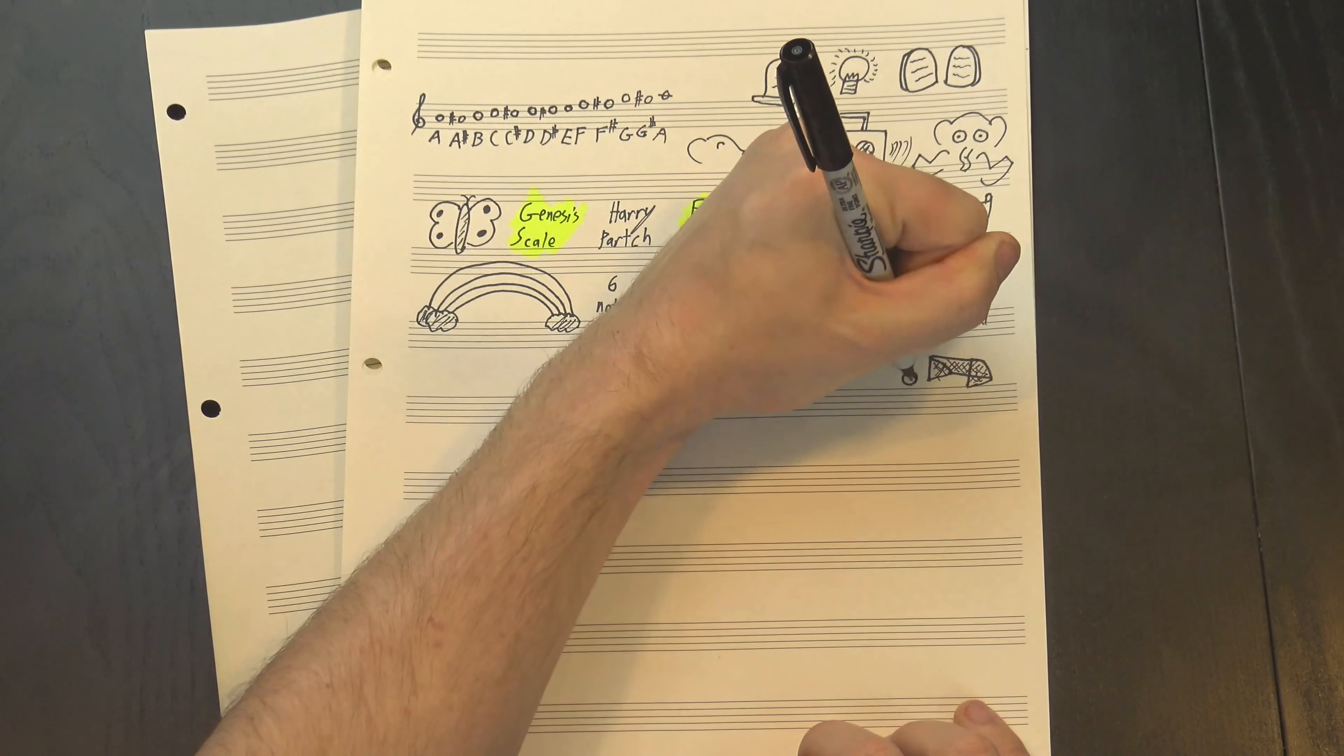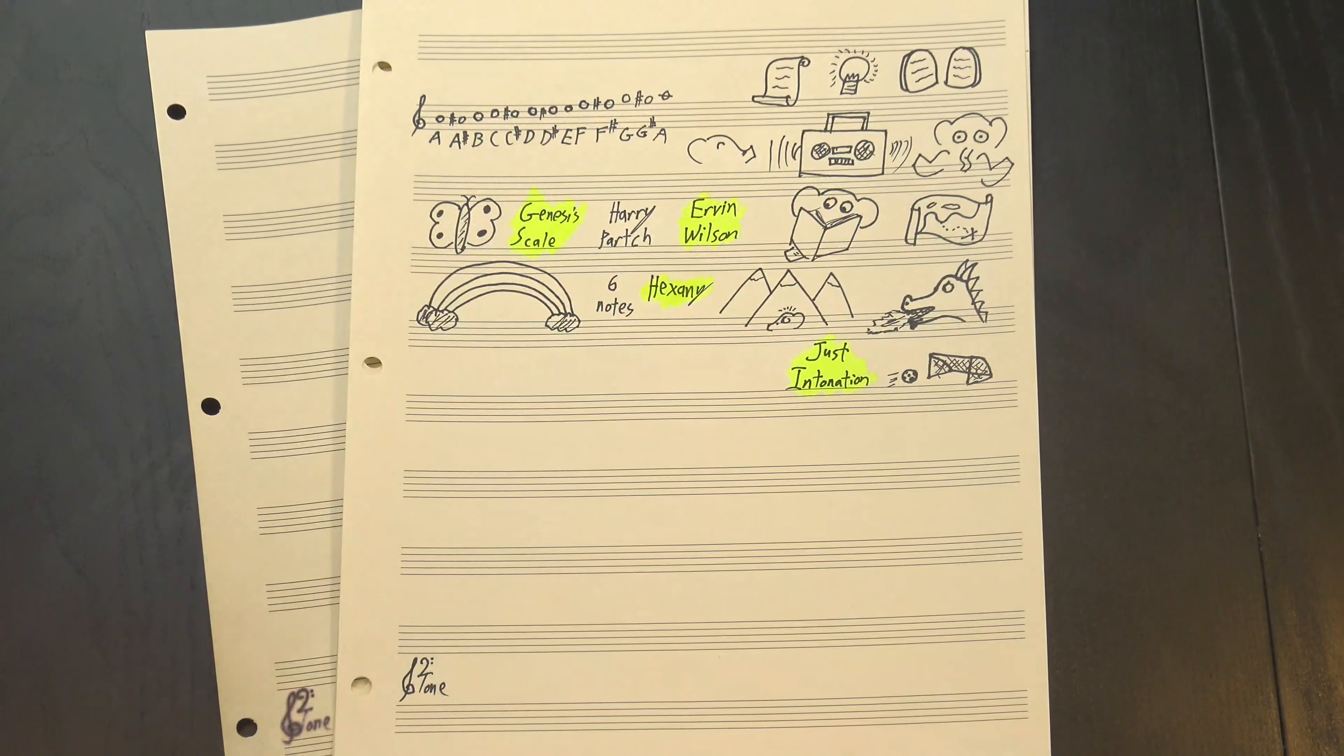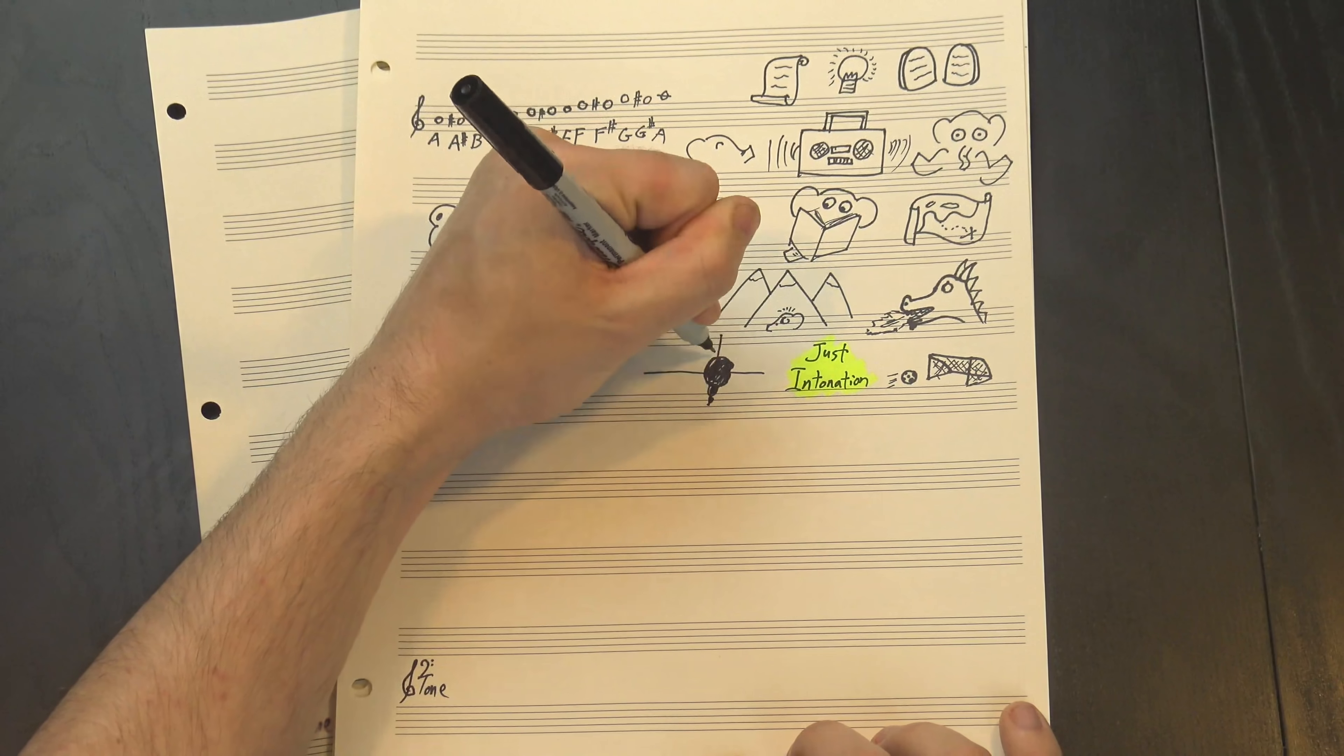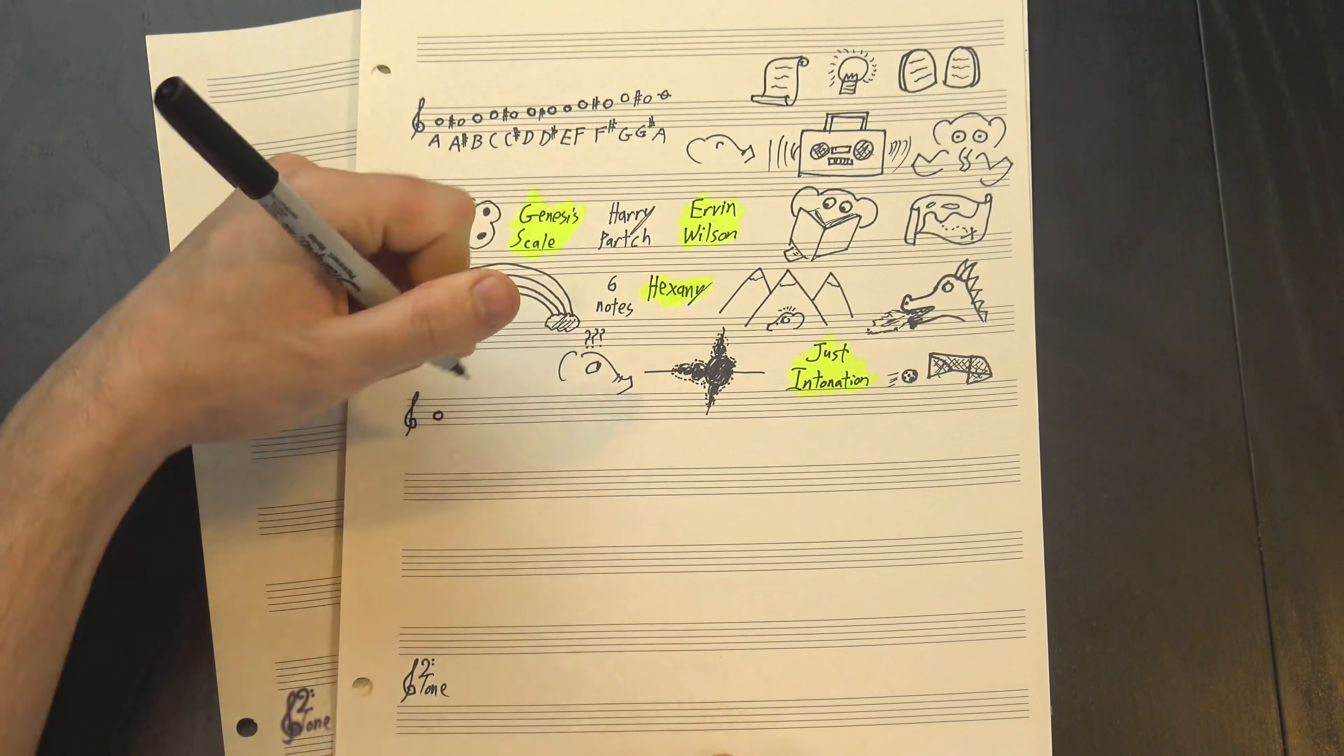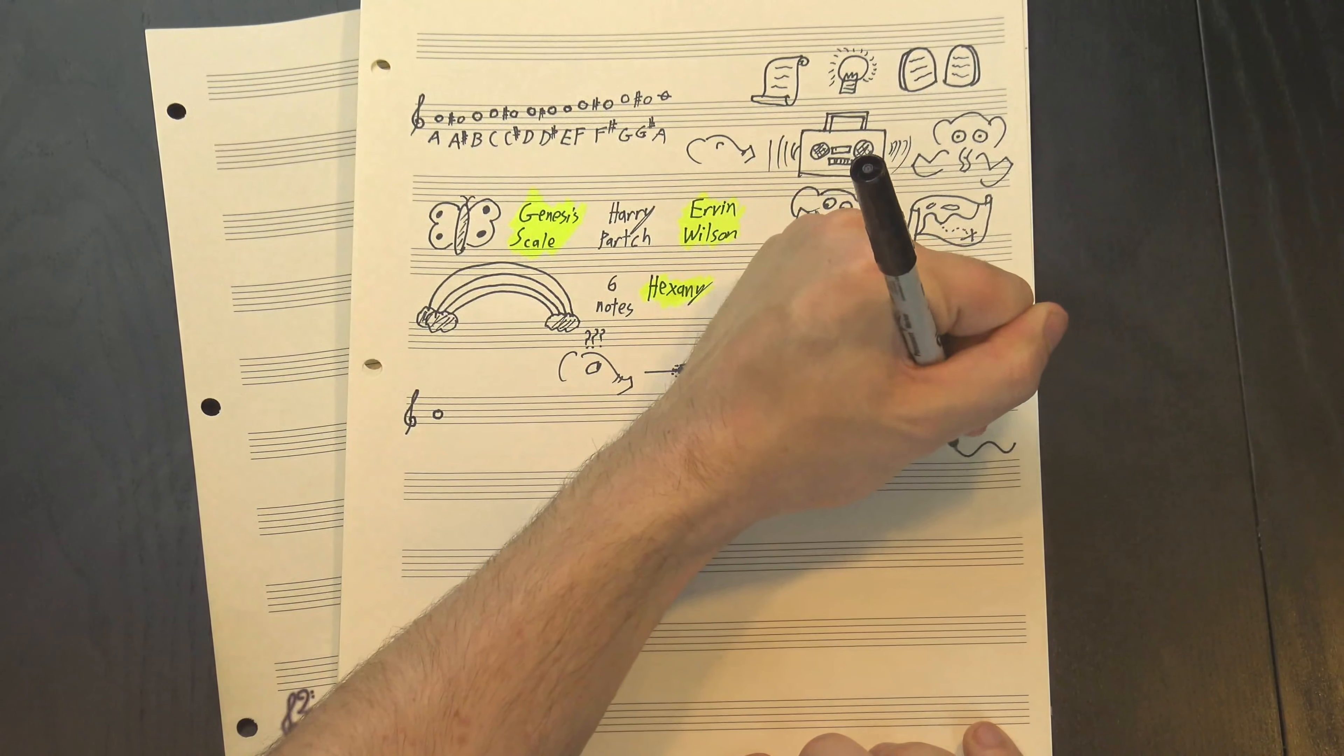First though, we have to talk about Parch and Wilson's goal: just intonation. Basically, this is the idea that the intervals between our notes should be mathematically pure. What does that mean? Well, when you hear a note, what you're really hearing is a sound wave with a specific frequency.